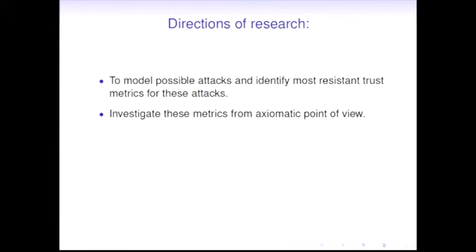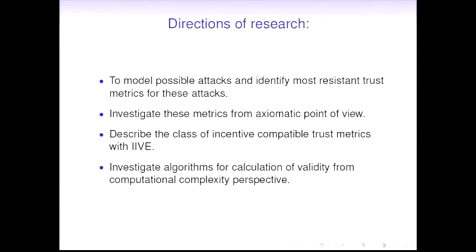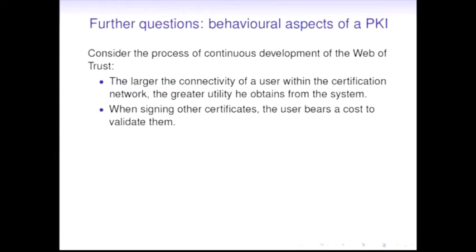Directions of research: model possible attacks and investigate attack resistance of metrics. There are other theoretical metrics largely residing in the continuous class of metrics - we may want to study them from an axiomatic perspective as well. Study this class of metrics which are incentive compatible and have the irrelevance of independent vertices and edges property. This seems to be quite a broad branch - if we think of some metrics which may be derived from PageRank, if we observe cardinal values rather than ordinal, it may not be the case. Some complexity issues arise here as well. If we impose a limitation on the length of certification paths, some problems become NP-complete.